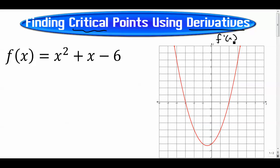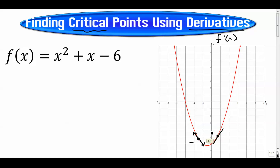We talk about tangent lines of functions. If we have a point, the tangent line touches the function only at one point and that tells you the general slope of the curve at that point. This one down here has a tangent line that goes downhill, which means the derivative is negative. Up here the derivative is positive because the tangent line is going uphill.